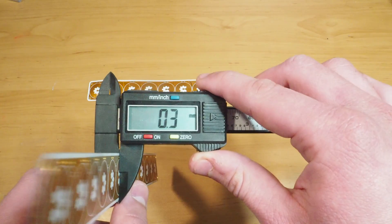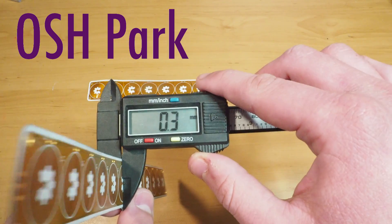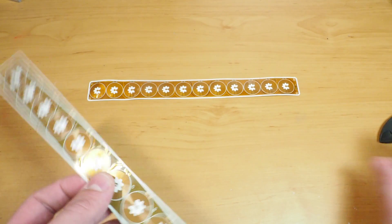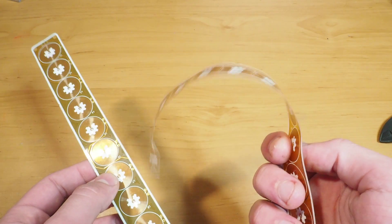Hi guys, I recently got these 0.3mm thick flexible PCBs from OSH Park and I thought it would be interesting to compare them to the ones I got which are 0.13mm thick.